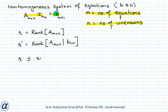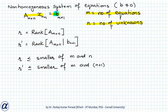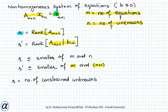Note that r is less than or equal to the smaller of m and n, and r' is less than or equal to the smaller of m and n plus 1, since the augmented matrix has m rows and n plus 1 columns. Conceptually, r is the number of constrained unknown variables in x, and r' is the number of linearly independent equations in the system.